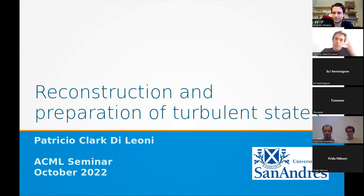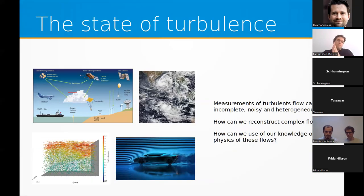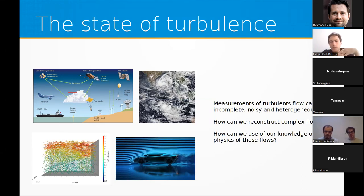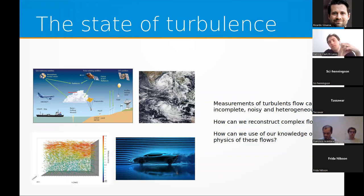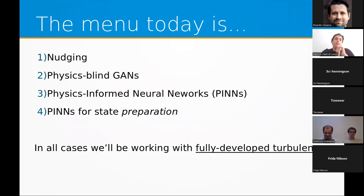If anyone has any questions at any point, please feel free to stop me. The main focus of the talk is how to reconstruct the urban flow out of measurements. Turbulent flows are complex, non-linear, and multi-scale — they have multiple scales both in space and time. We can never measure every scale or every component: sometimes we can measure velocity but not pressure or temperature, or vice versa.